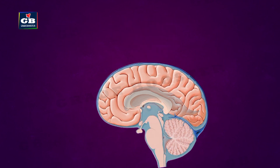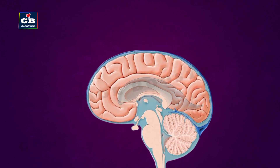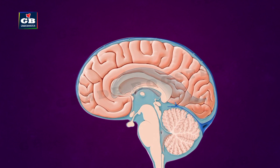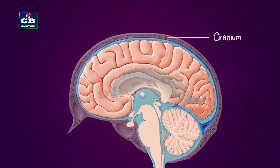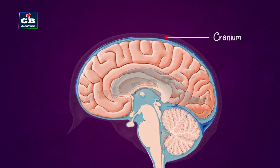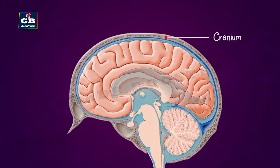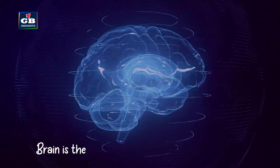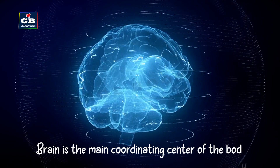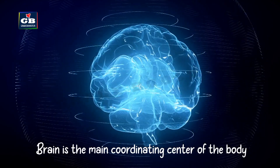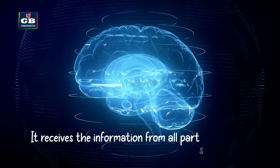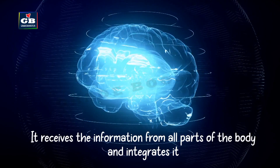The brain, along with the meninges, is protected by an outer bony case called the cranium. The cranium is a hard structure made up of bone. The brain is the main coordinating center of our body — it receives information from all parts of the body and integrates it.